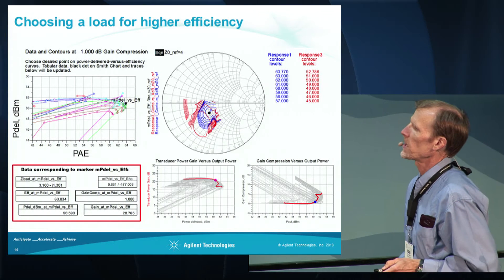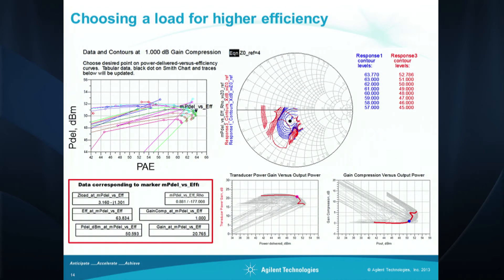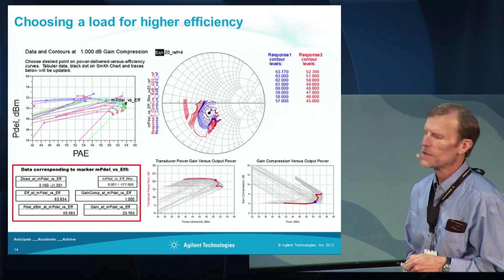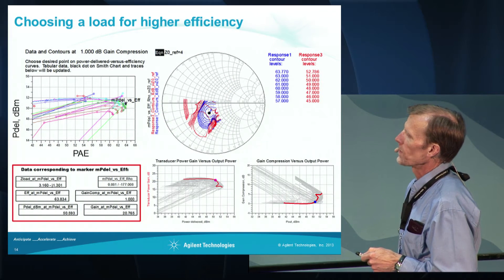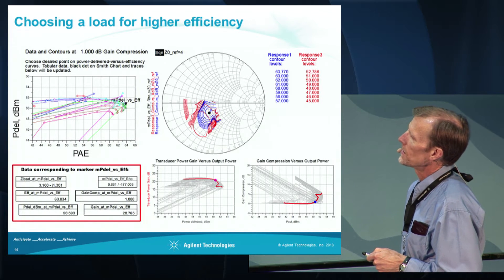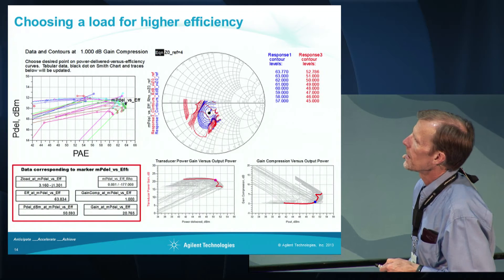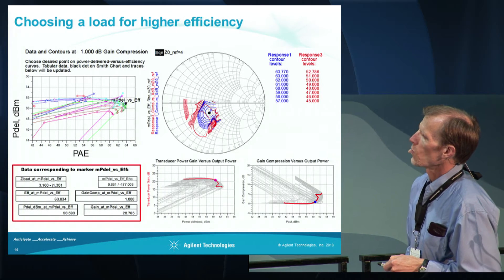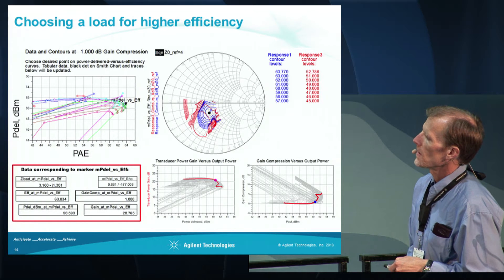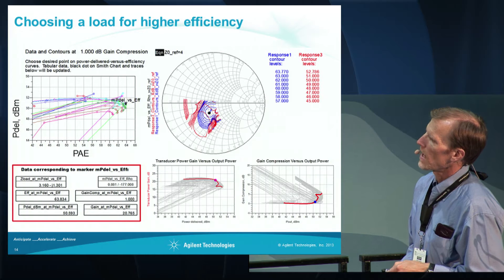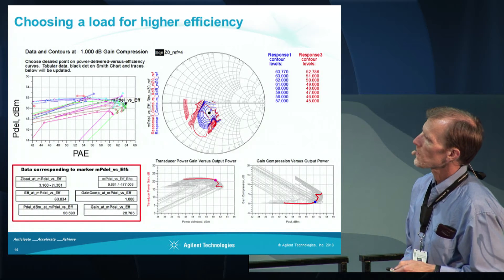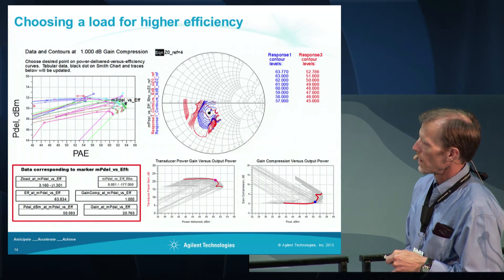This is a different way of looking at the data. I'm plotting on the y-axis power delivered versus power added efficiency. We can select one of these points using this marker — in this case we've chosen a point for higher efficiency. This data is all at the 1 dB compression point. The point that we've selected between power delivered and power added efficiency corresponds to this load on the Smith chart, which is a 4 ohm Smith chart. If we choose this load and sweep the power, this red trace corresponds to the data over all power levels, and the data in the red box corresponds to this particular load.